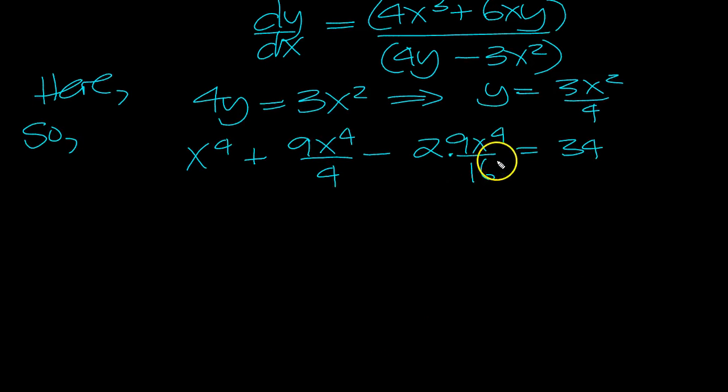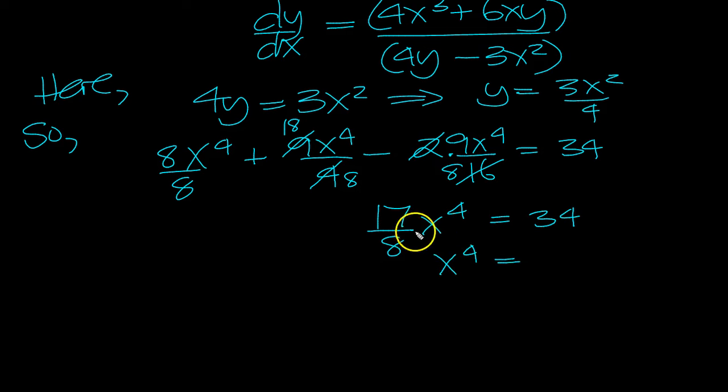So what have we got? We've got an 8, we've got 18 over 8, and here we've got 8 over 8. So we've got 18 is 26. 8 minus 9 is minus 1. 17 over 8x to the 4 equals 34, which looks promising.